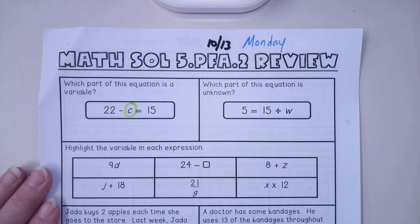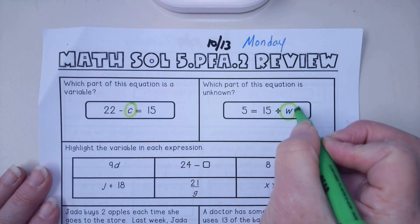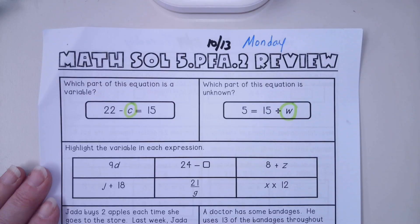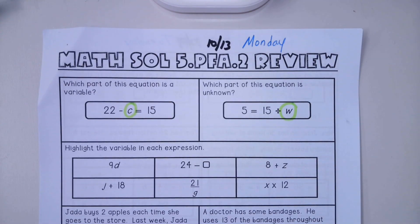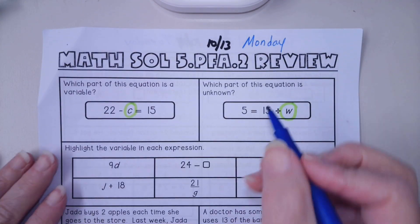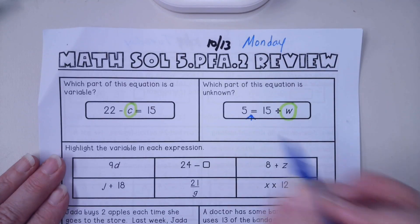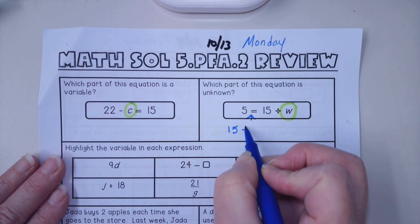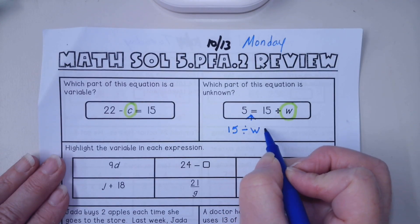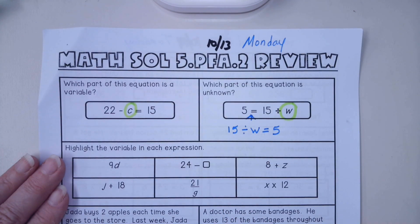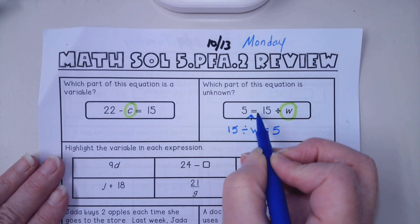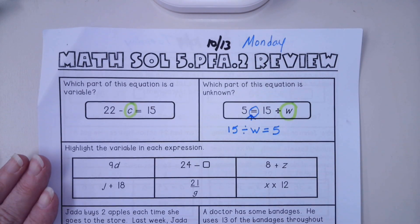Let's look at number two. Which part of this equation is unknown? Again, it is a variable. This equation has the equal sign in a different location, so please make sure you're aware of that. You could rewrite this equation as 15 divided by W equals 5. Same equation. Just watch where that equal sign is because it comes up frequently where they'll switch it around and try to trick you.